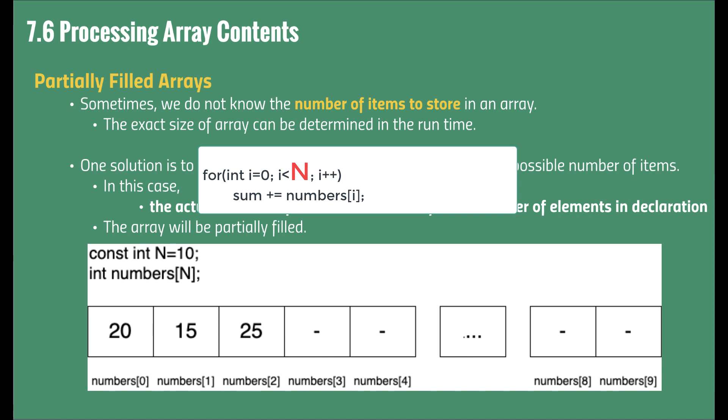I have a quick question. Who has the value of exact number of actual elements? This is the one thing we have to be careful when we use the partially filled array.